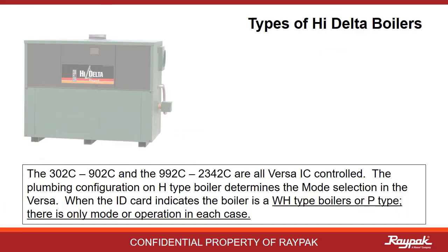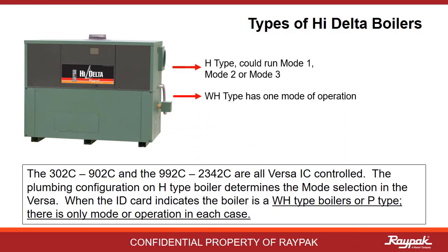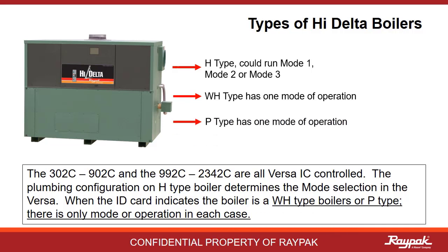When ordering a high-delta boiler, you can order it as a hydronic heater or H-type, a water heater or WH-type, or a pool heater or P-type. The ID card inside the unit indicates what kind of boiler it is.